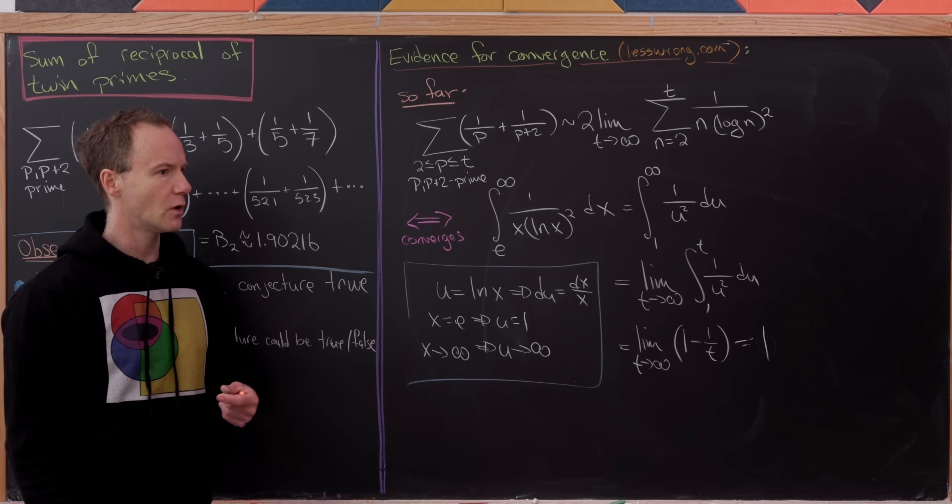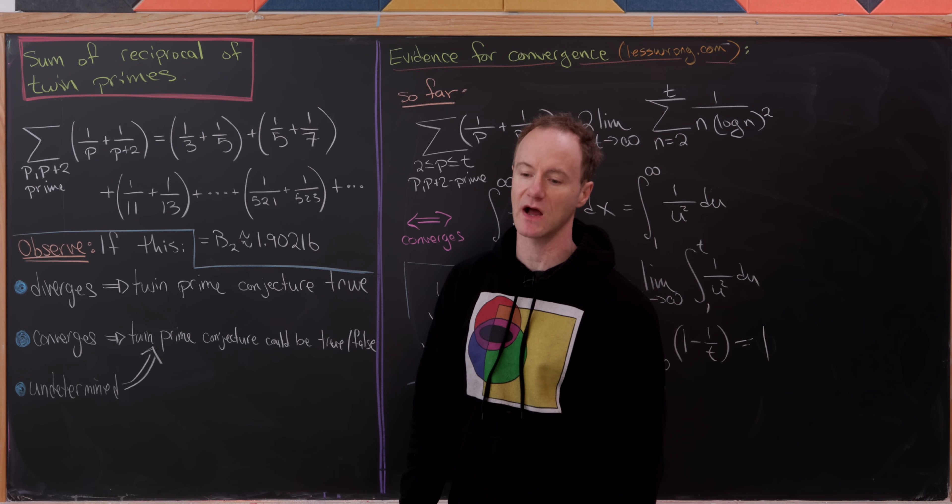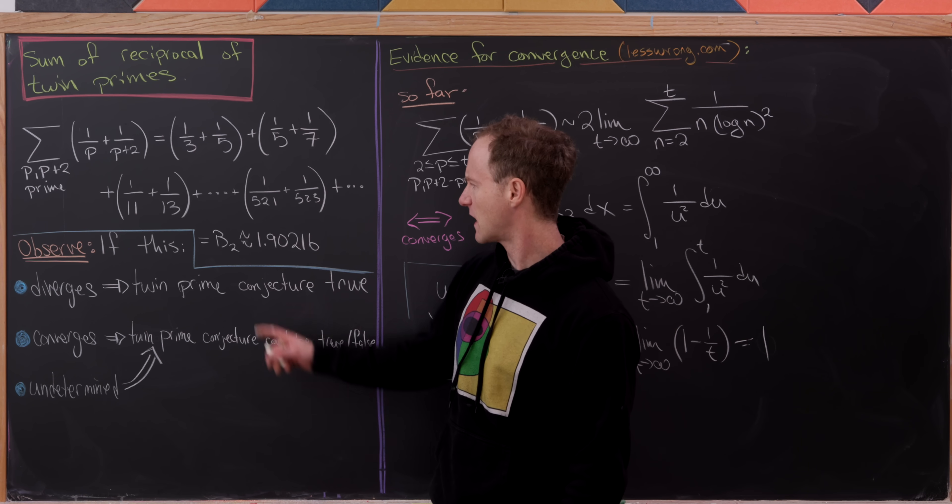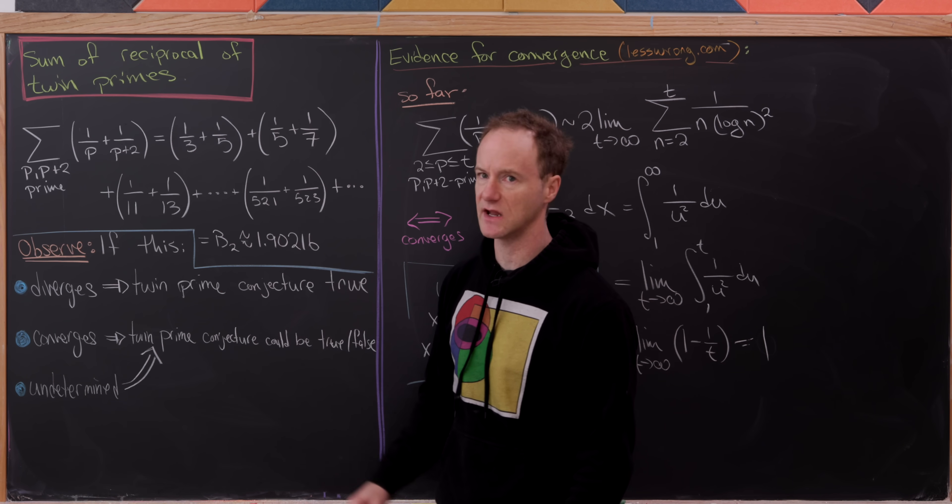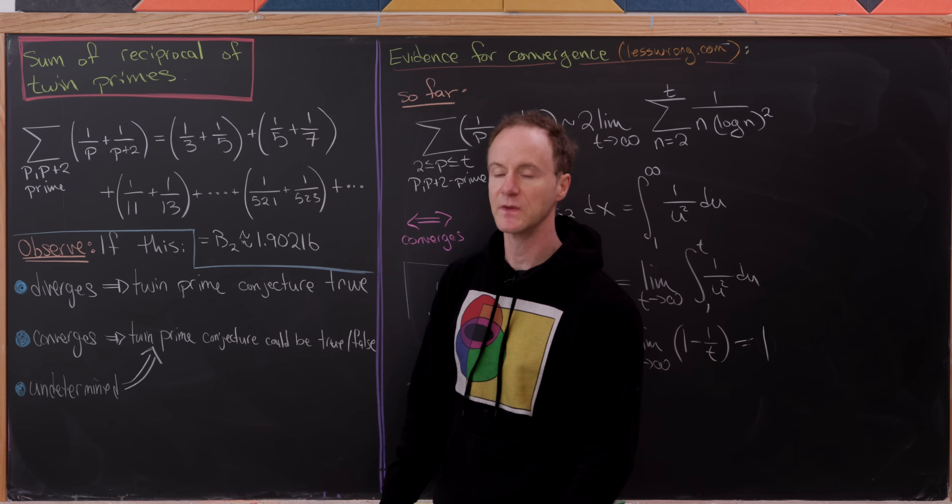So well, what have we done? We've just shown some evidence that this sum of reciprocal of twin primes converges. Well in fact, you might look at this constant that it supposedly converges to and see this subscript of 2. Well in fact, there's a whole family of these constants, b sub 4, b sub 6, so on and so forth, which represent different groupings of primes.